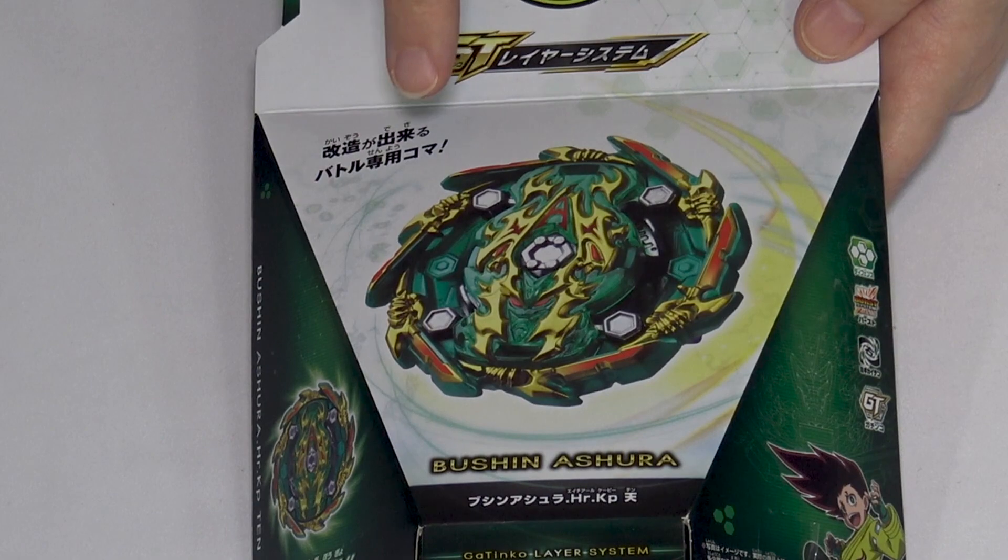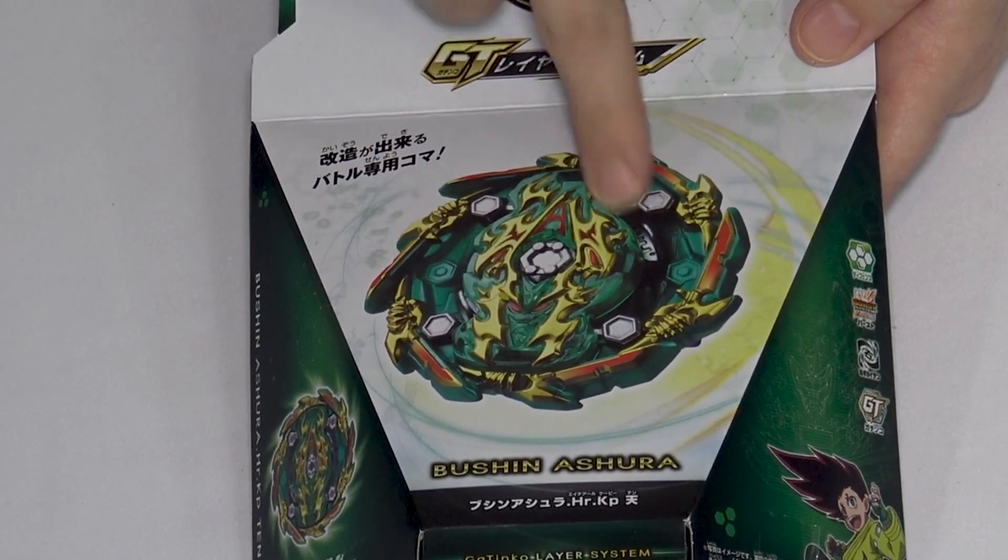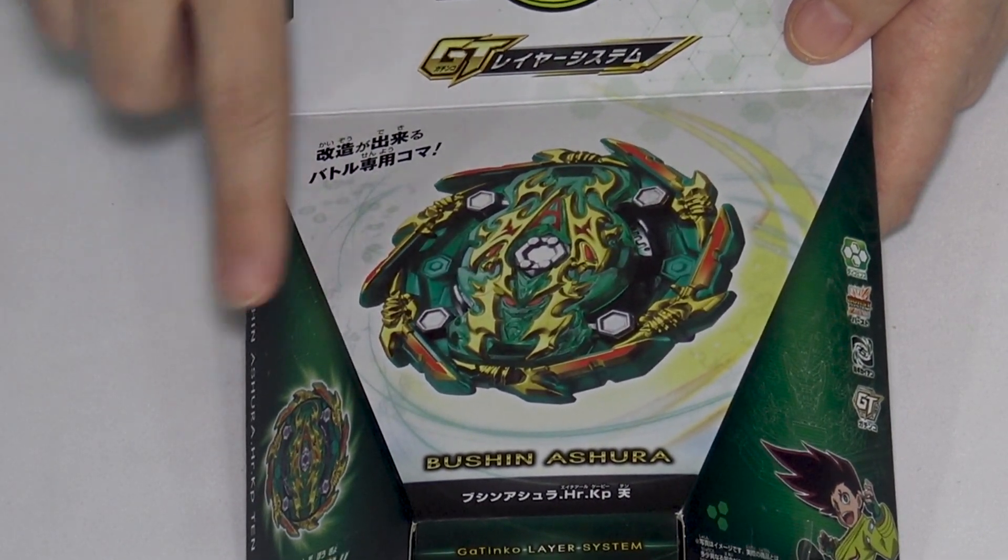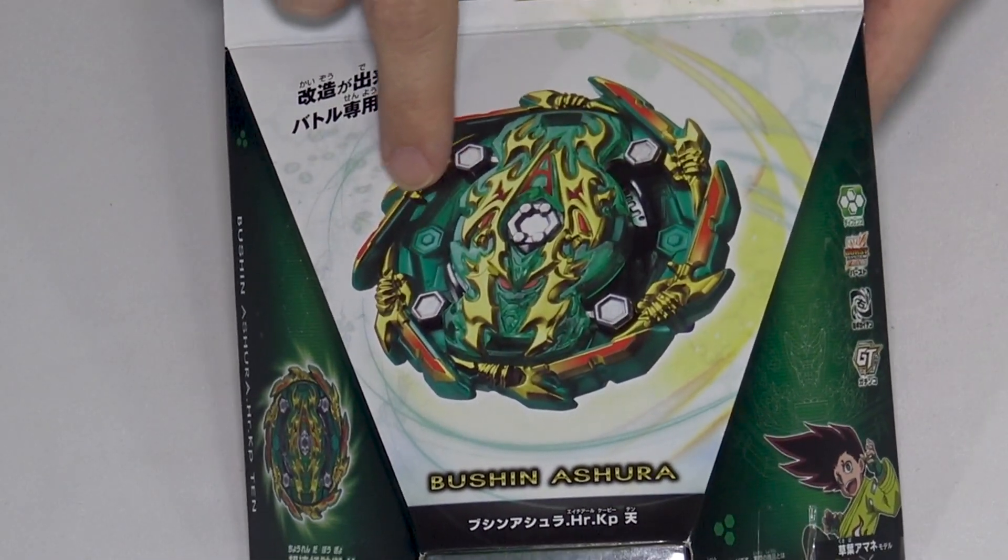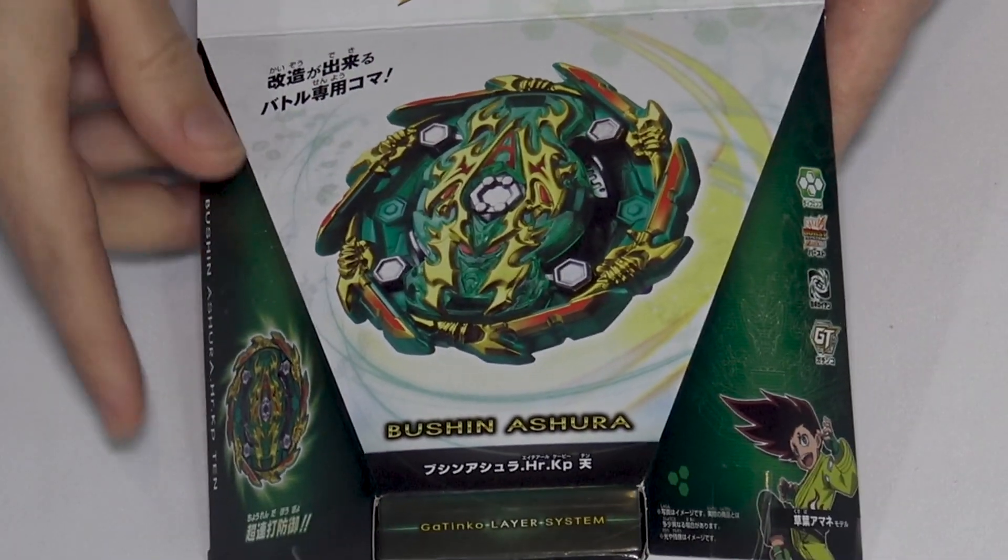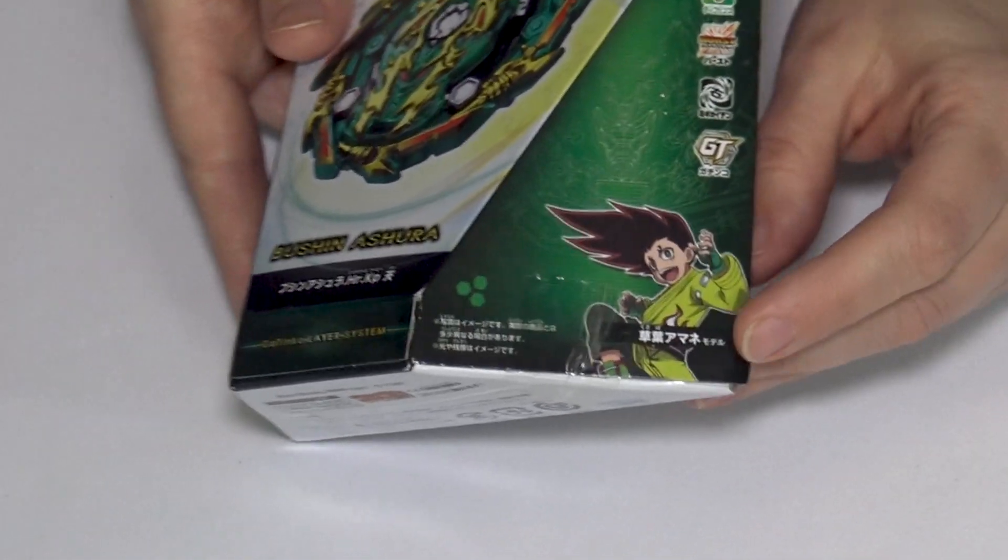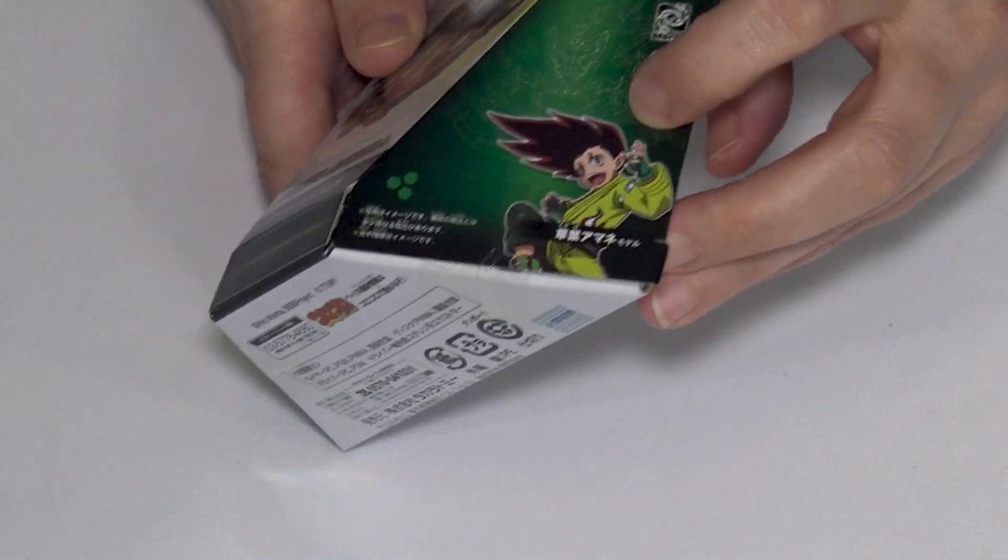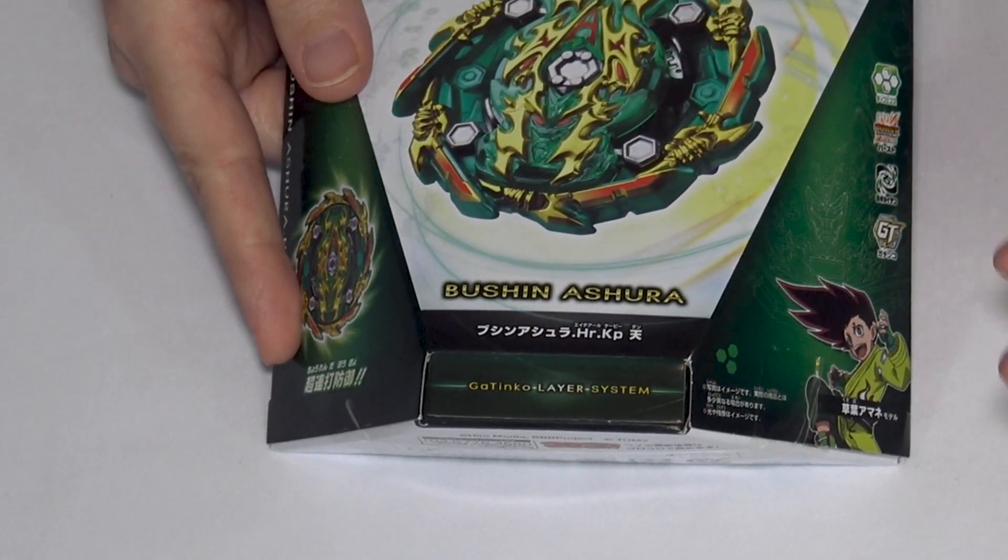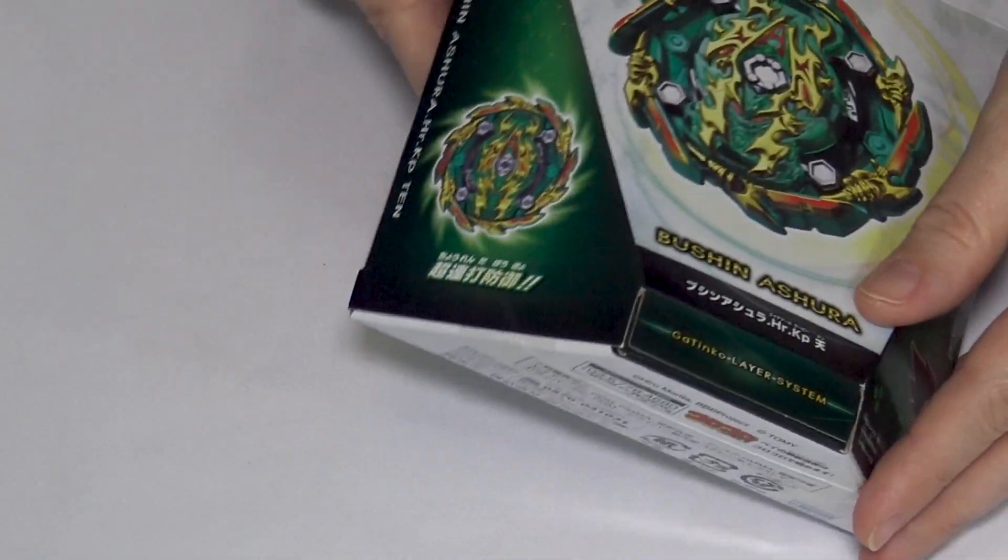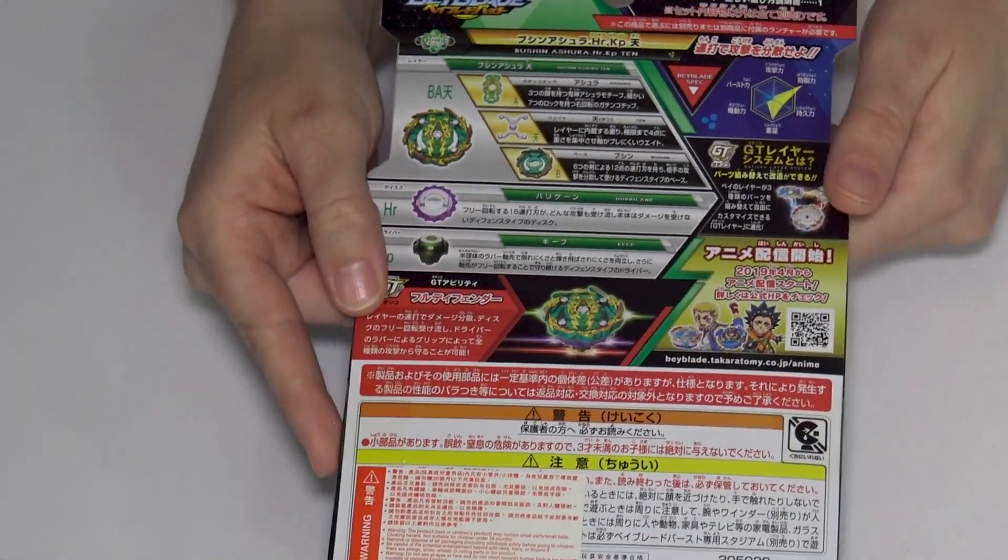Bushin Ashura looks really cool. I like the green and gold colors. It looks like it has four weight points in different areas, so I'm guessing the metal weight is a different shape. This guy kind of looks like Ken - he just needs puppets and straight hair. The base looks a bit like Valkyrie's base.